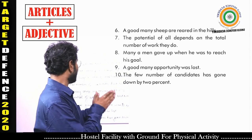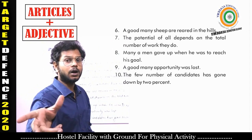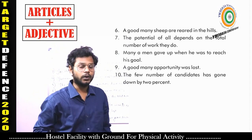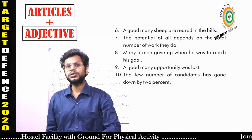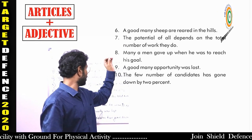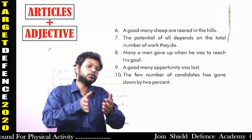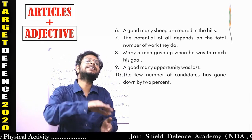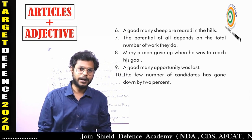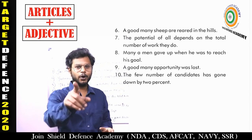Question 9: 'A good many opportunity was lost.' After 'A good many,' the subject must be plural and the verb must be plural. 'Opportunity' is singular — wrong; it should be 'opportunities.' 'Was' is singular — wrong; it should be 'were.' Correct: 'A good many opportunities were lost.'